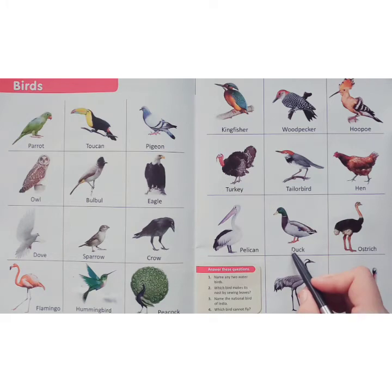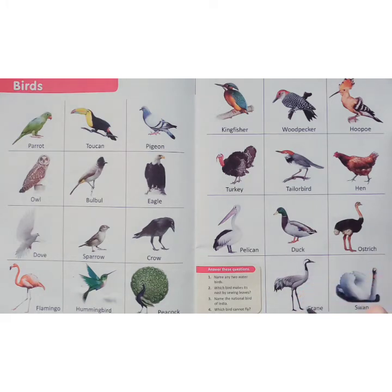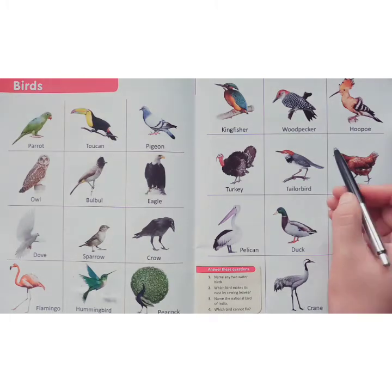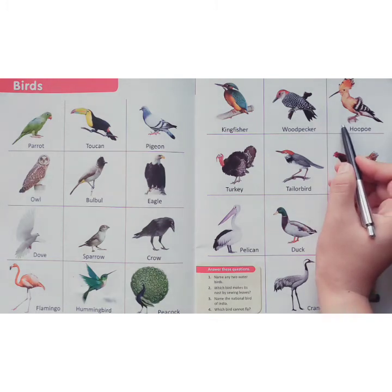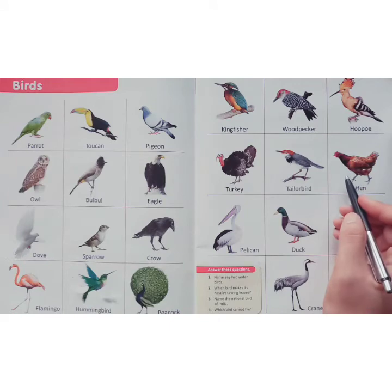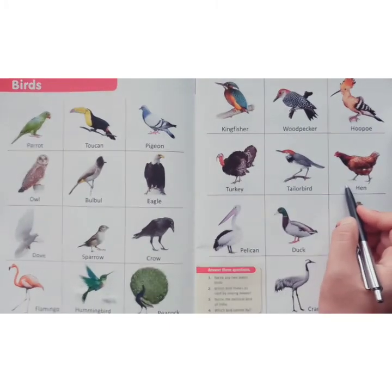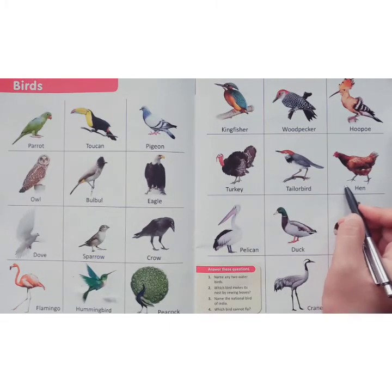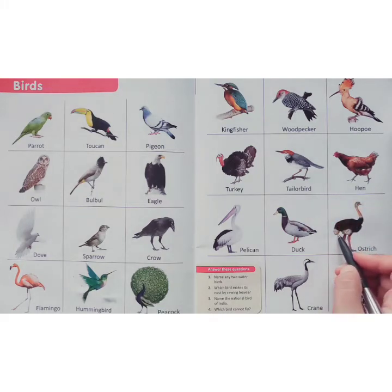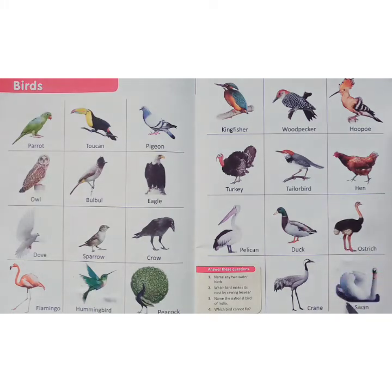And this is duck. And this is crab. Very good. And this is hobo. This bird is hen. And this is ostrich. Now the last is swan.